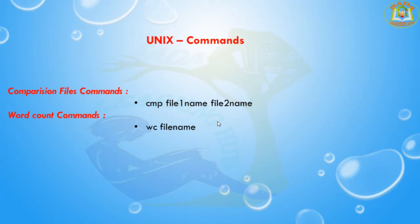If you want to compare two files in UNIX, we can use the CMP command. The CMP command is used to compare two files. The syntax is: CMP space file1 space file2. If you want to count the words from any file, you can use the WC command. The WC command is used to count the words in your file.